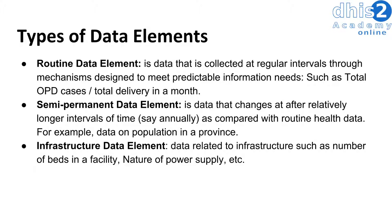We can separate the types of data elements that we collect into different classifications. This includes routine data elements, which are data elements collected through our routine reporting mechanisms. We also have semi-permanent data elements — data that changes after a relatively stable period of time. For example, we can consider population data semi-permanent, as this typically changes every year.